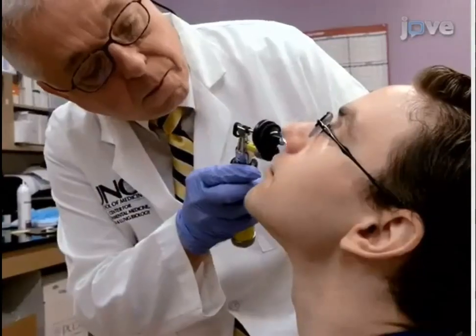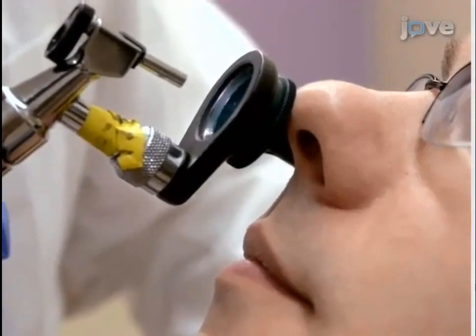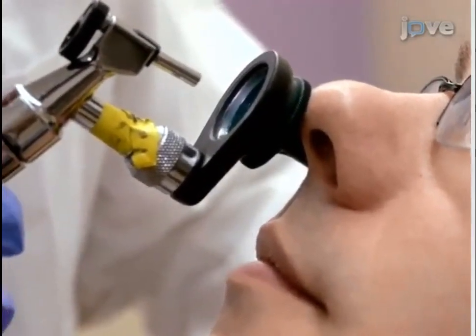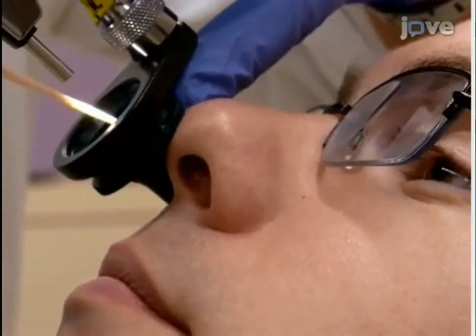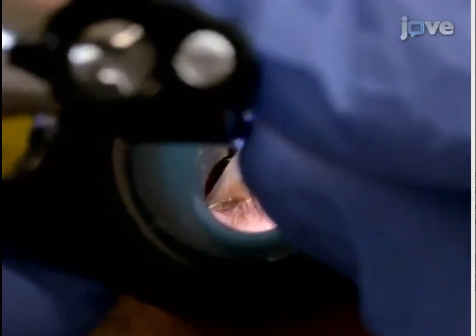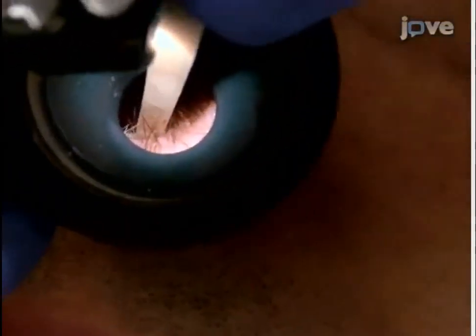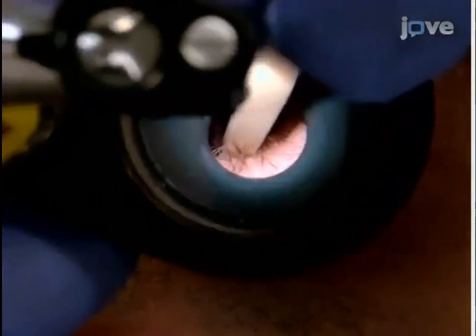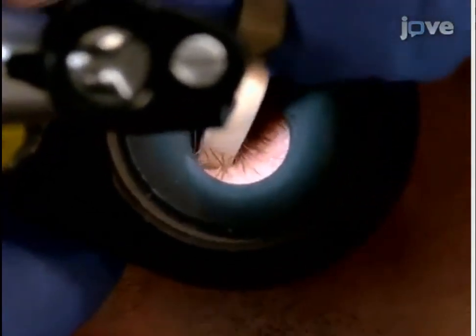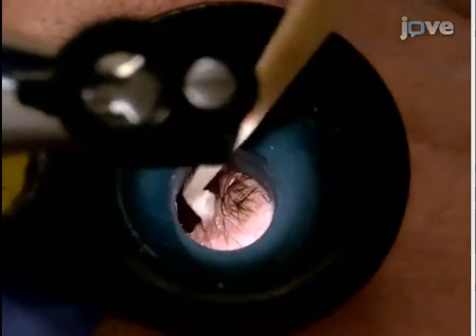Insert the otoscope speculum into the nostril and visualize the inferior turbinate with illumination. Insert a sterile thermoplastic curette through the speculum with the tip extended distally to the back of the turbinate. Using gentle pressure on the inferior surface of the turbinate, draw the curette across the mucosal surface five times and then retract the curette.